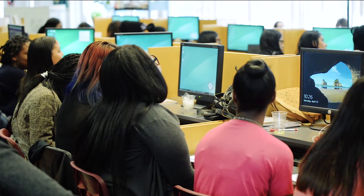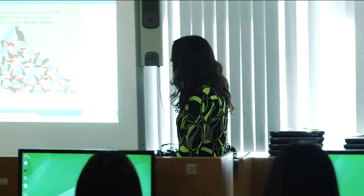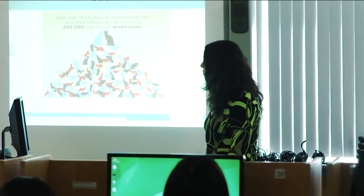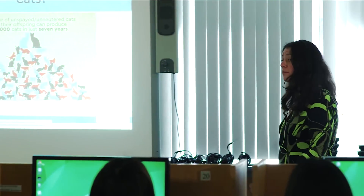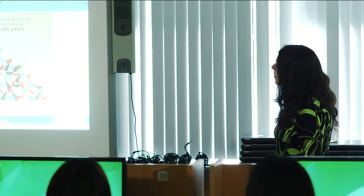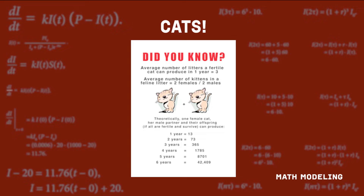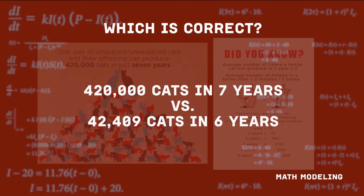We're going to think about cats. This is a poster taken from the Humane Society, and this is a modeling problem proposed at a different university. It says one pair of unspayed and unneutered cats and their offspring can produce 420,000 cats in seven years. Another source says you'd end up with 42,409 cats in six years — very different numbers. So you can start questioning: how many cats are there really?